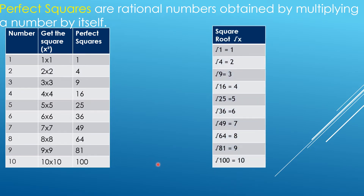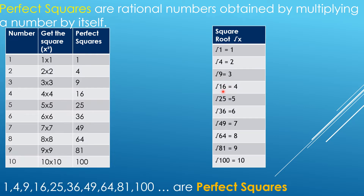Now, another way of asking is: what is the square root of a number? What is the square root of 1? The answer is 1. What is the square root of 4? The answer is 2. What is the square root of 9? The answer is 3. The square root of 16 is 4. So we're just going to focus on the principal root, which means the positive square root.